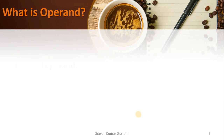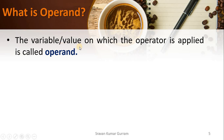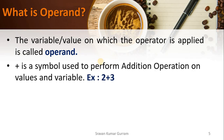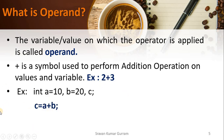Let us see what is an operand. An operand is a variable or a value on which the operator is applied. See the same example for better understanding. Plus is a symbol we use to perform addition. We are applying this plus operator on the values 2 and 3, so the values 2 and 3 are called operands. In the case of A + B, A and B are called operands — the operand may be a value or a variable.